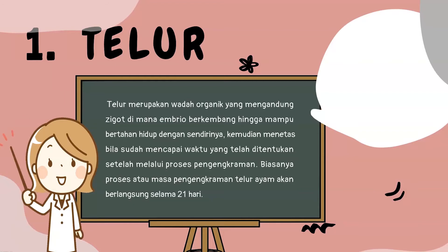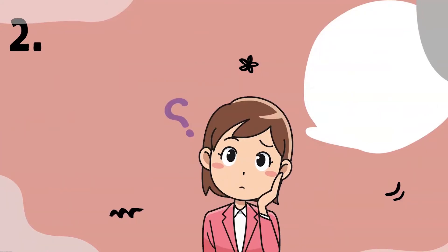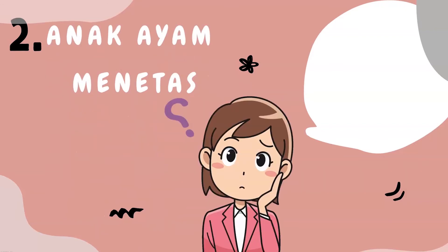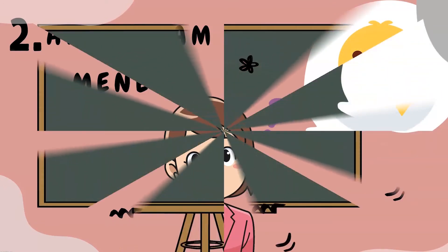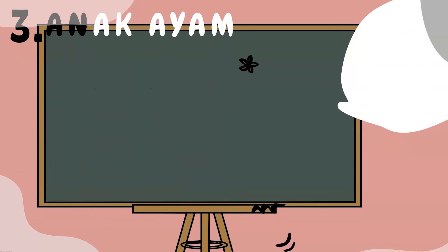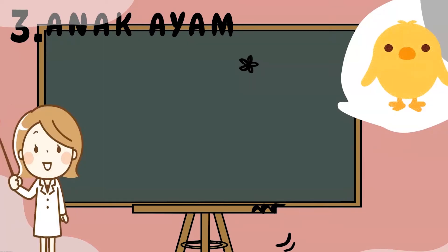Sekarang akan diperlihatkan seperti apa bentuk telur ayam itu. Seperti ini ya adik-adik bentuk telur ayam itu. Setelah berbentuk telur, kira-kira proses selanjutnya apa ya? Jadi proses selanjutnya adalah telur akan menetas menjadi anak ayam.